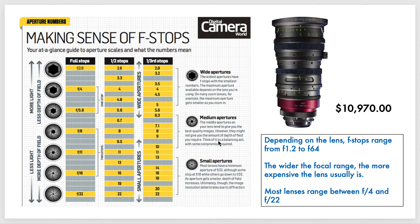Then you have the medium apertures in the middle. These give you the best quality images, but they tend to be mid-range on depth of field, and that may be problematic. Think of it as a balancing act with some compromise required — decisions you have to make every time you take a photo. As the resolution on digital cameras becomes sharper, you can start to go more outside this range because you can do things in Photoshop and Lightroom to help sharpen your photos.